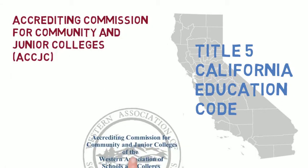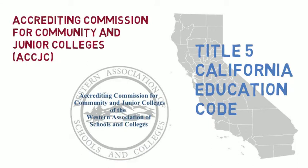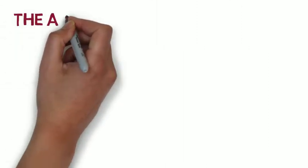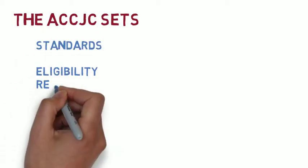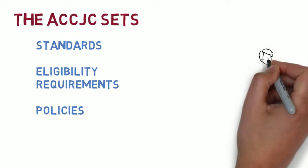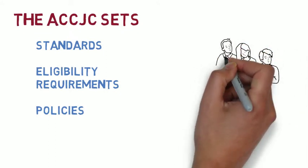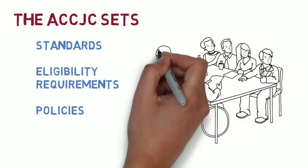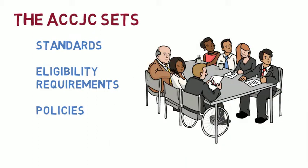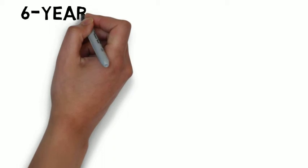The ACCJC is part of the regional accrediting agency called the Western Association of Schools and Colleges, or WASC. It is common for members of our college to use the terms ACCJC and WASC interchangeably; however, the term ACCJC is more accurate. As with all regional accrediting agencies, the ACCJC accredits colleges and sets all its standards, eligibility requirements, and policies through a peer review process. All colleges aligned with the ACCJC are asked to assist in the review of member colleges' accreditation status and the formation and revision of ACCJC standards.